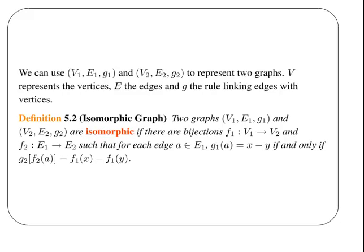We can use the notation to represent two different graphs. V1, E1, G1, and V2, E2, G2, to represent two graphs. The V represents the vertices, the set of vertices. E represents the edges. And G represents the rule linking edges with vertices.